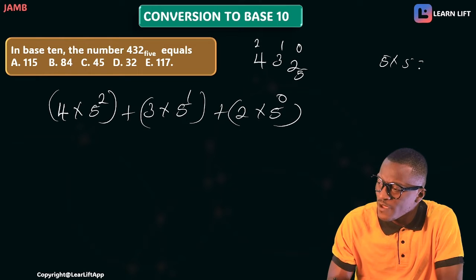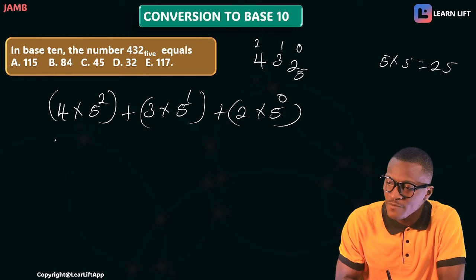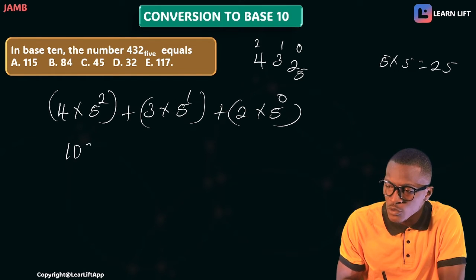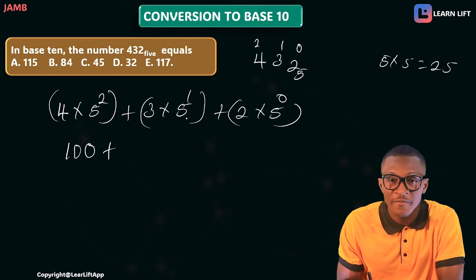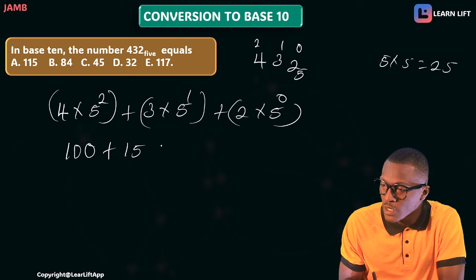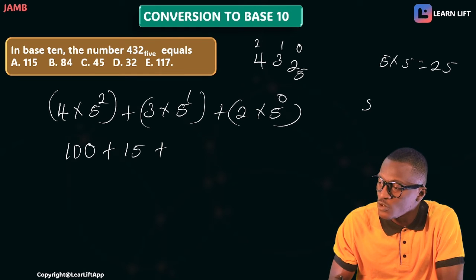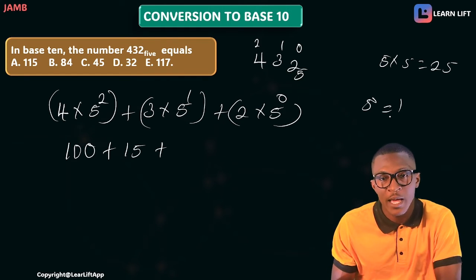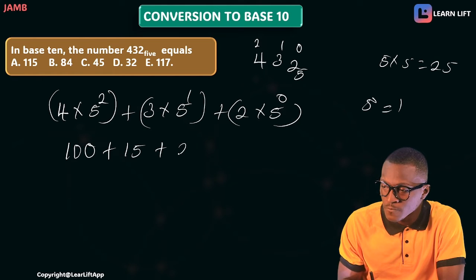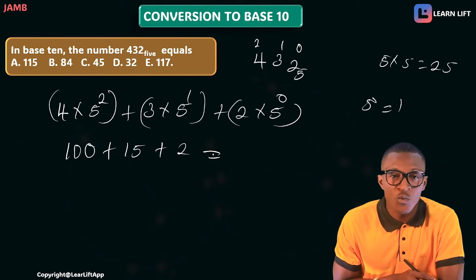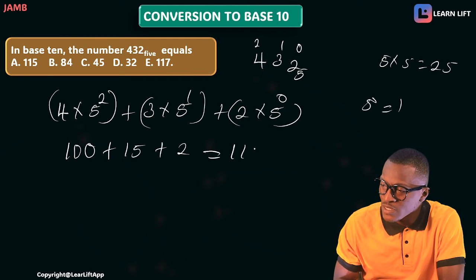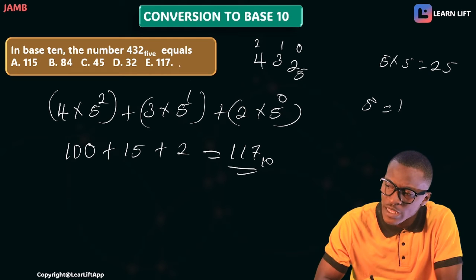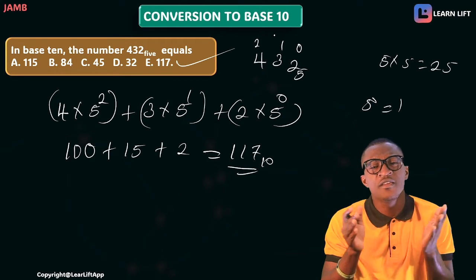Now, 5 squared is 5 times 5 which is 25, and 25 times 4 gives 100. Plus 5 raised to power 1 is 5, and 5 times 3 is 15. Plus 5 raised to power 0 is 1, and 1 times 2 is 2. Adding them: 100 + 15 = 115, plus 2 = 117. So the answer is 117 in base 10, which is option B.